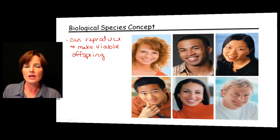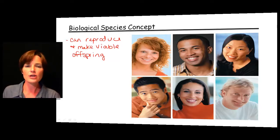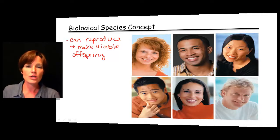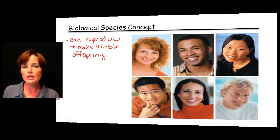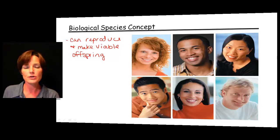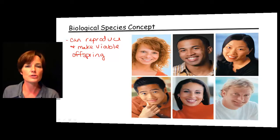So if you have a female on one side of the earth and a male on the other side of the earth — and we're talking about humans — those two may look very, very different from each other. But there's not really any question in our mind that if both are healthy individuals, they could mate and produce children that are going to be viable, healthy offspring.